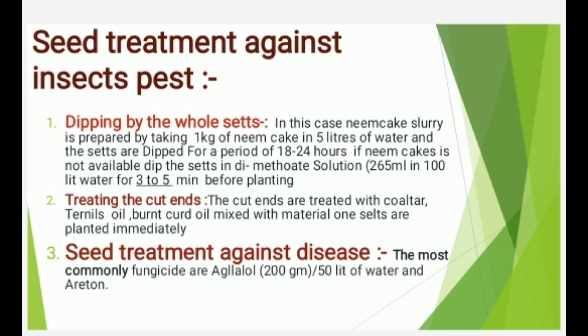Seed Treatment Against Disease: The most commonly used fungicide is Agallol at 200 grams per 50 liters of water.